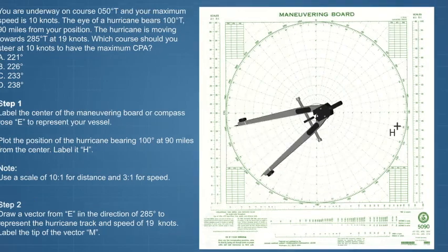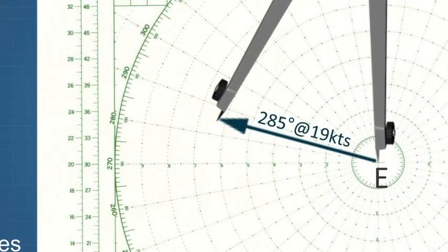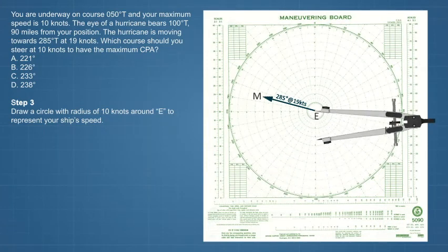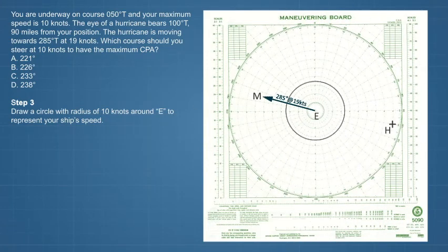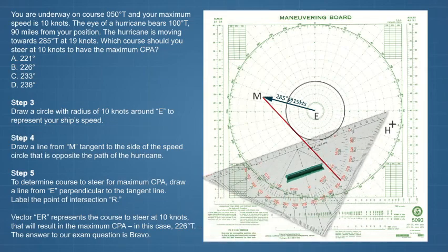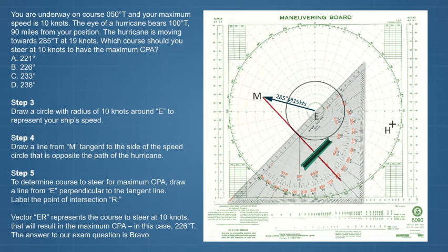Draw a vector from E in the direction of 2-8-5 degrees to represent the hurricane track and speed of 19 knots. Label the tip of the vector M. Draw a circle with radius of 10 knots around E to represent your ship's speed. Draw a line from M tangent to the side of the speed circle that's opposite the path of the hurricane. Remember the hurricane is heading 2-8-5 degrees true. To determine course to steer for maximum CPA, draw a line from E perpendicular to the tangent line. Label the point of intersection R.